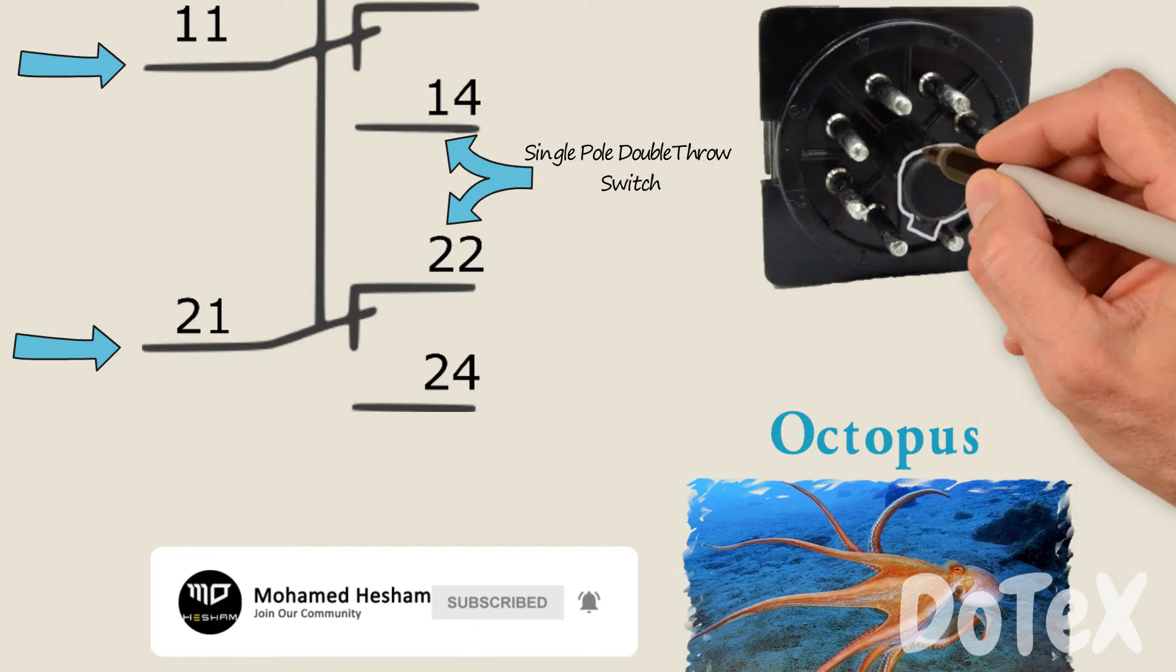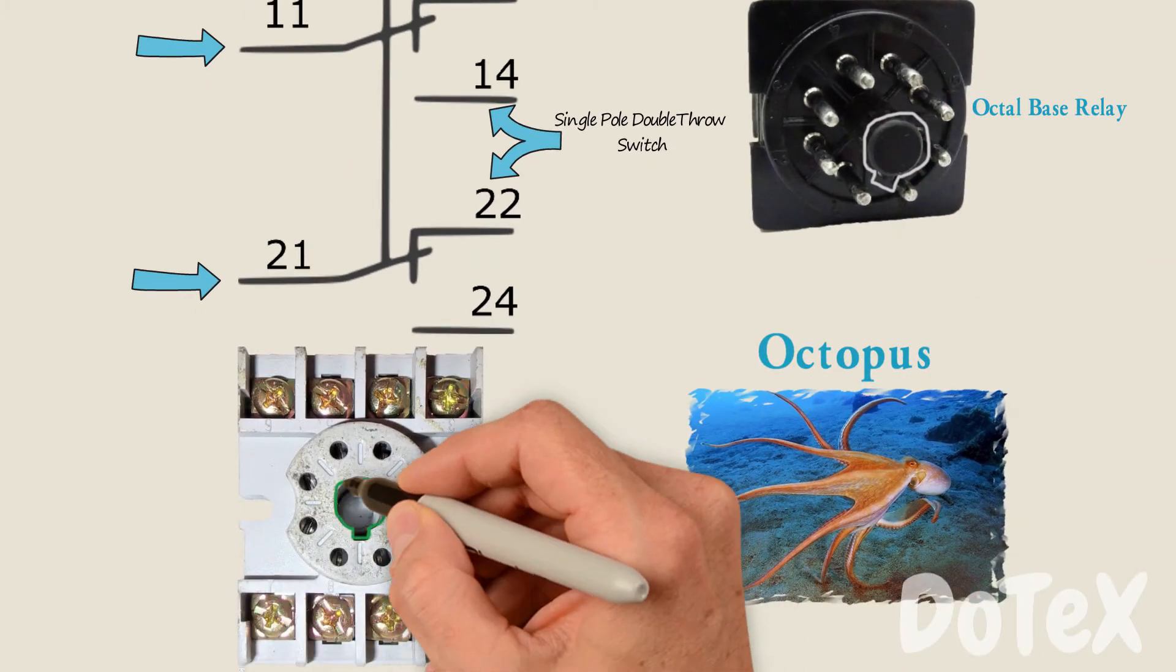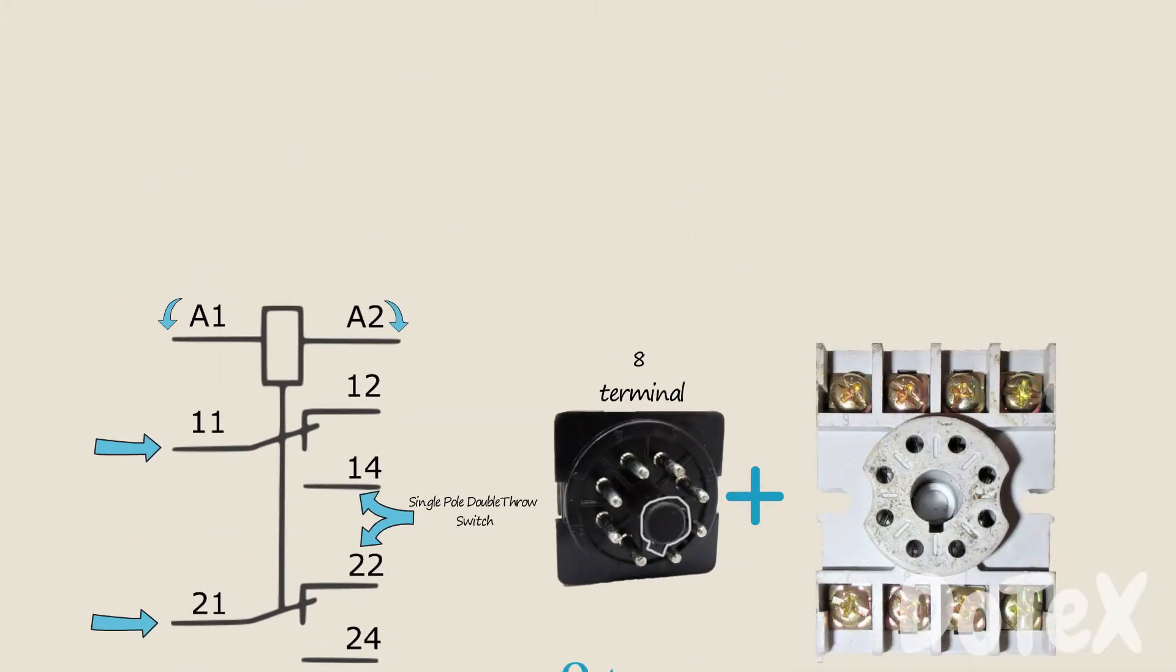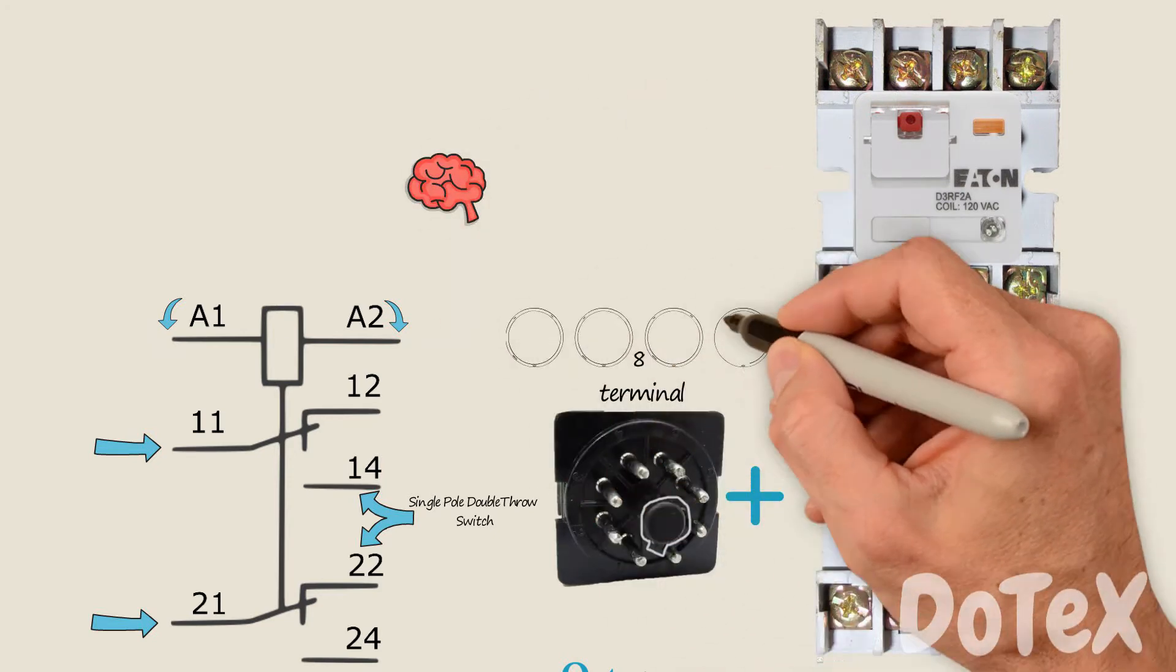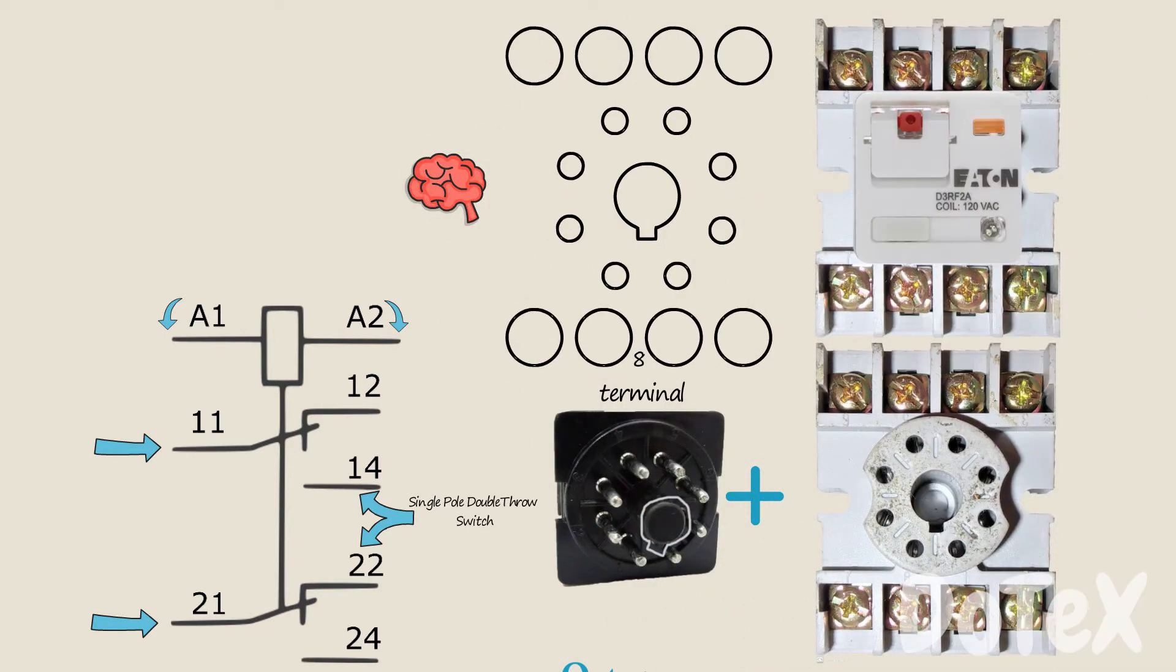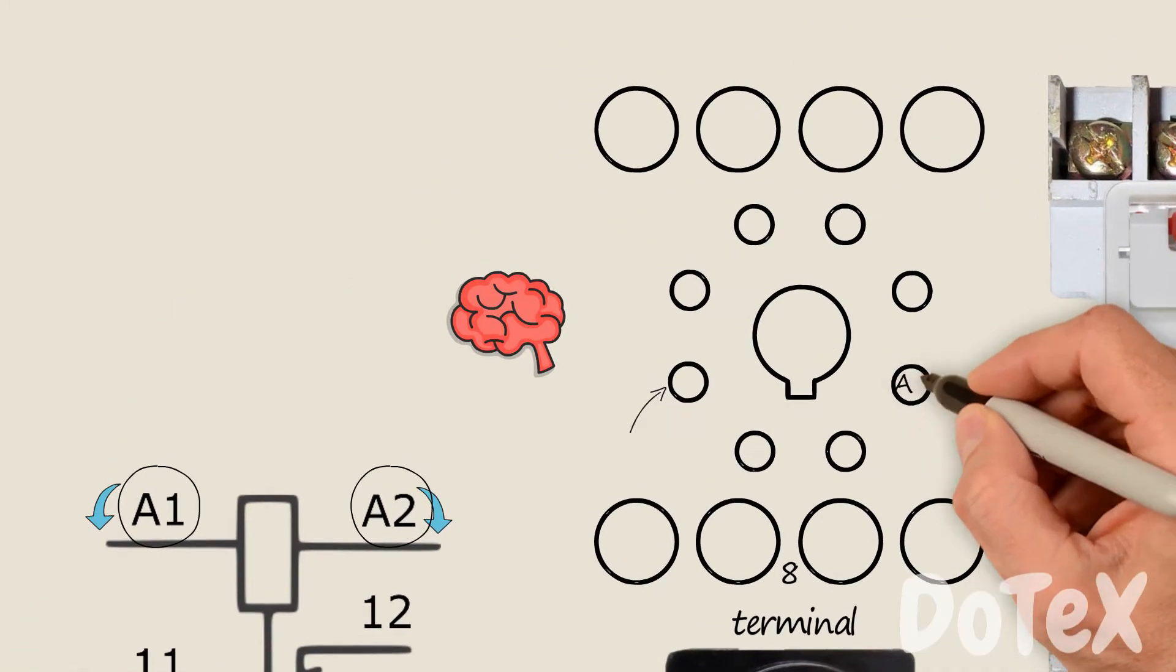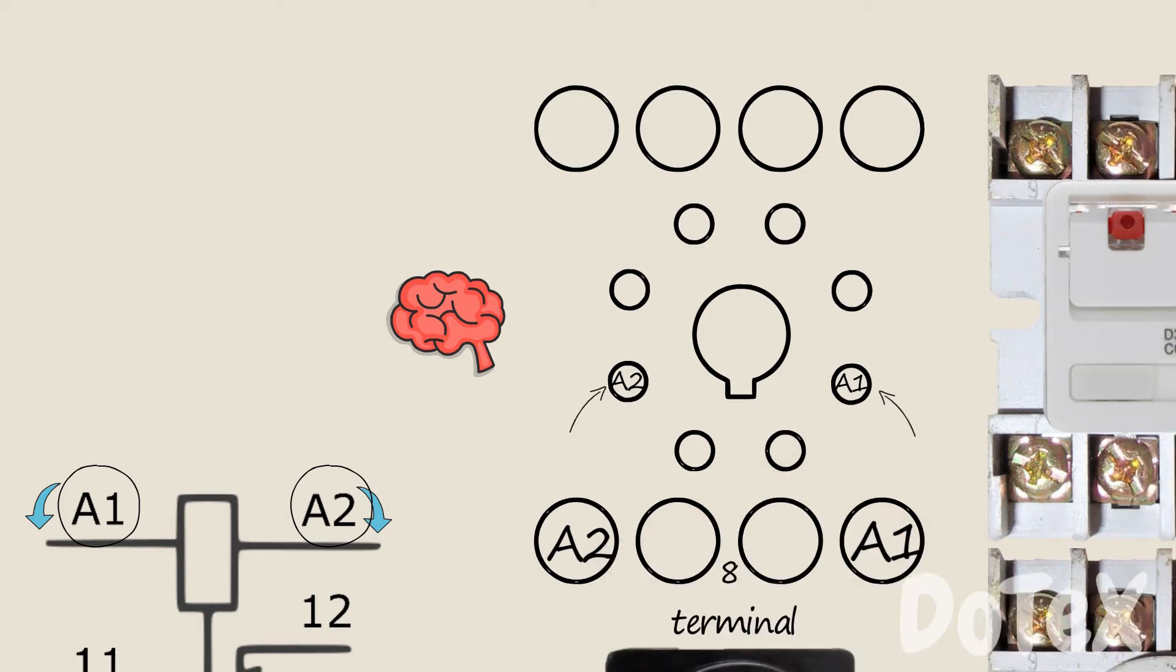Note the key shape on the plug-in relay and on the socket or the base, as you see here. If the relay is inserted to the socket correctly like this, keep in mind we are looking at the base, not the bottom of the relay. The two outside terminals at the bottom of the base are the two coil terminals, A1 and A2. Let's mark these two pins on the base of the relay.